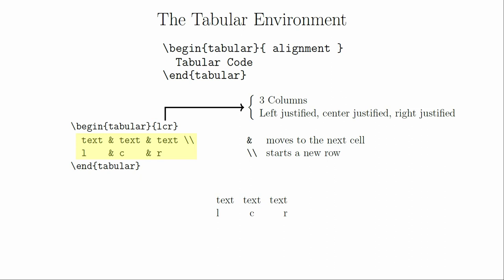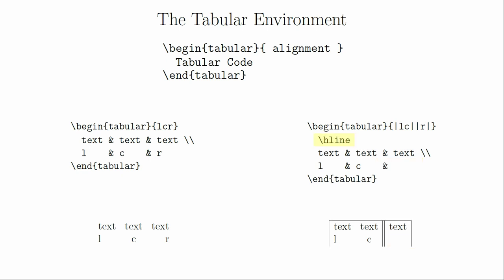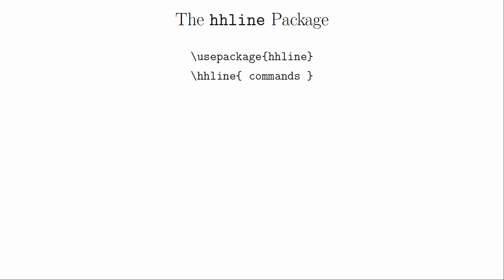From here, we can start to get fancier with the table. If we wanted to add vertical lines to separate the columns, we would put vertical bars into the alignment definition. We can also get double lines by putting two vertical bars between the columns. To create a horizontal line through the table, use the hline command at the start of the row directly below where you want the line to be. To create a line across the top, call hline at the start of the first row of data. A double line can be created by using two hline commands. If you want to get fancier with your horizontal lines, you will have to use the hhline package.